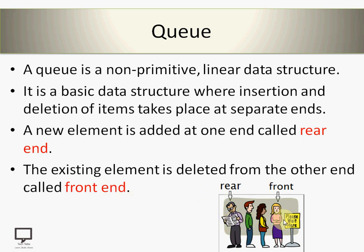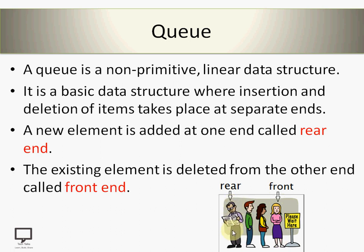This is a general queue of people all waiting in a sequence to get a service. The lady at the front of the queue will get service first, and the rest are waiting. The person at the rear position is the last one inserted into the queue. Insertion takes place in this direction, so the first inserted element is at the front and the last inserted element is at the rear. The first inserted element gets service first and the last inserted gets service last.